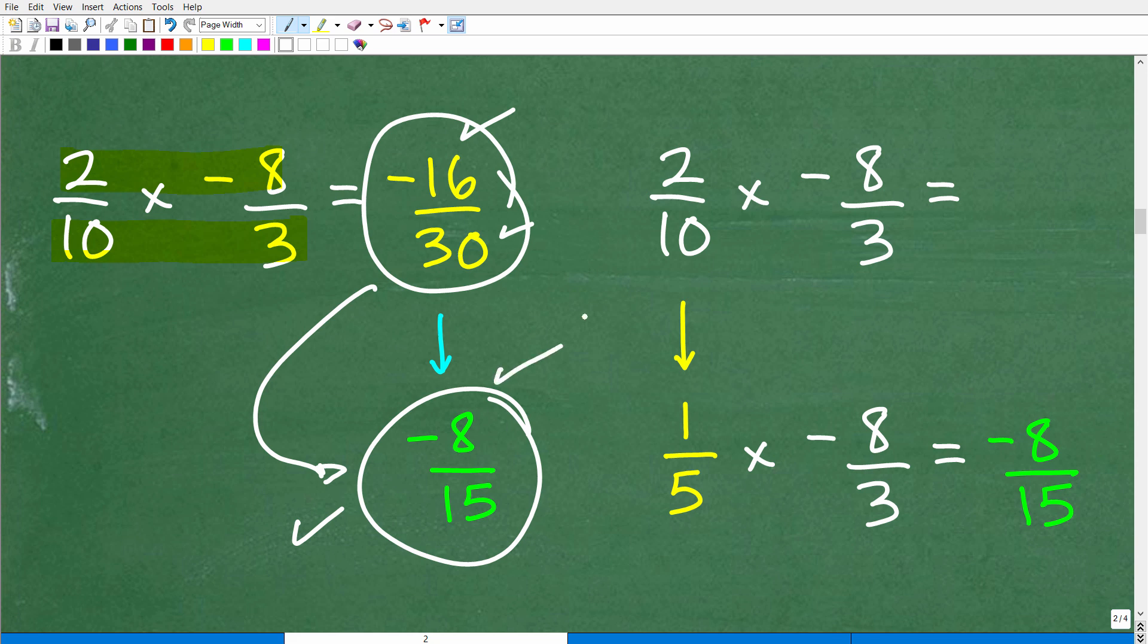Now, one other way you could do this problem is before you multiply, some of you might have seen, oh, 2 tenths, I can reduce this fraction before I multiply. And that's a good strategy as well. So simply just reduce 2 tenths down to 1 fifth. So now we have 1 fifth times negative 8 over 3. And when I multiply the numerators and denominators, you end up with negative 8 over 15. Same answer.